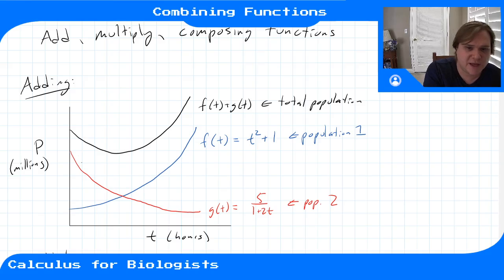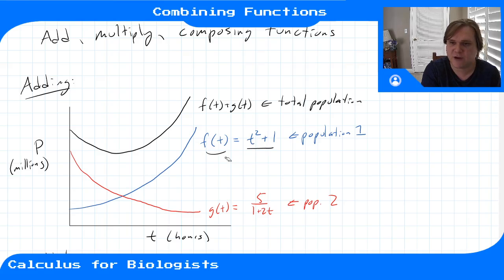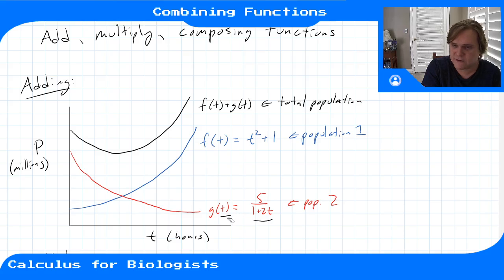A typical situation where this might come up: maybe you have two types of bacteria on the same dish. You have a blue bacteria that's growing with the function f(t) = t² + 1, which describes its population growth. The second population is actually dying out as the other one takes over — that one follows g(t) = 5 + 1/2t. So population two is dying out.